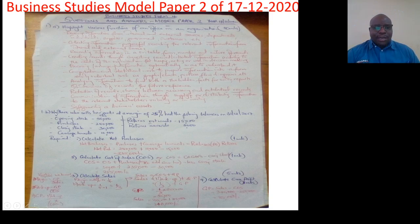Question number one B. Wairimu who sells her goods at a margin of 25% had the following balances on 31st December 2017. Opening stock 50,000 shillings, purchases 240,000 shillings, closing stock 30,000 shillings, carriage inwards 10,000 shillings, return outwards 15,000 shillings, returns inwards 5,000 shillings. So you are required one to calculate the net purchases one mark.